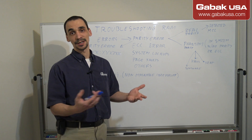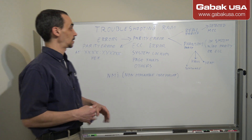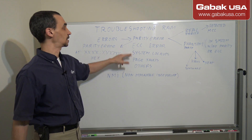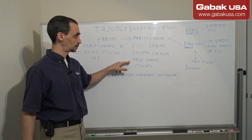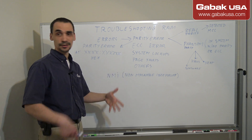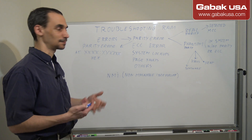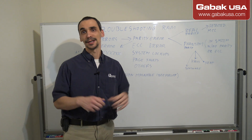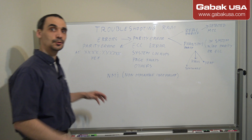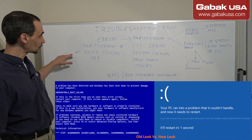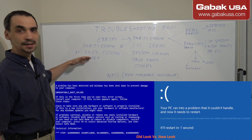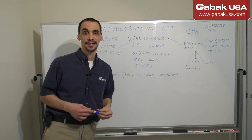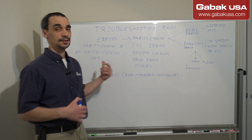The types of errors you may encounter include ECC errors, system lockups, page faults, and others. Usually when you get a blue screen of death on Windows, you'll see some kind of parity error displayed as a hexadecimal number.